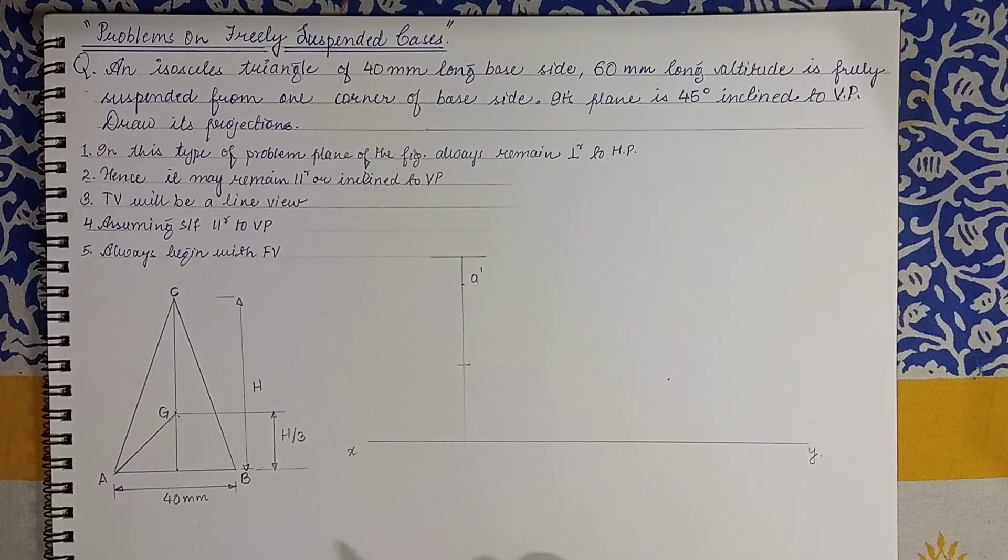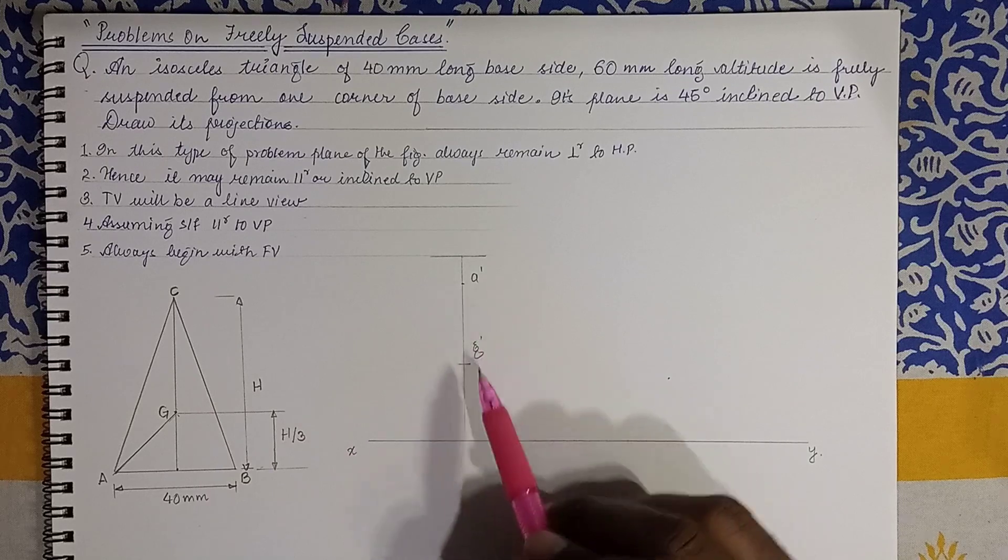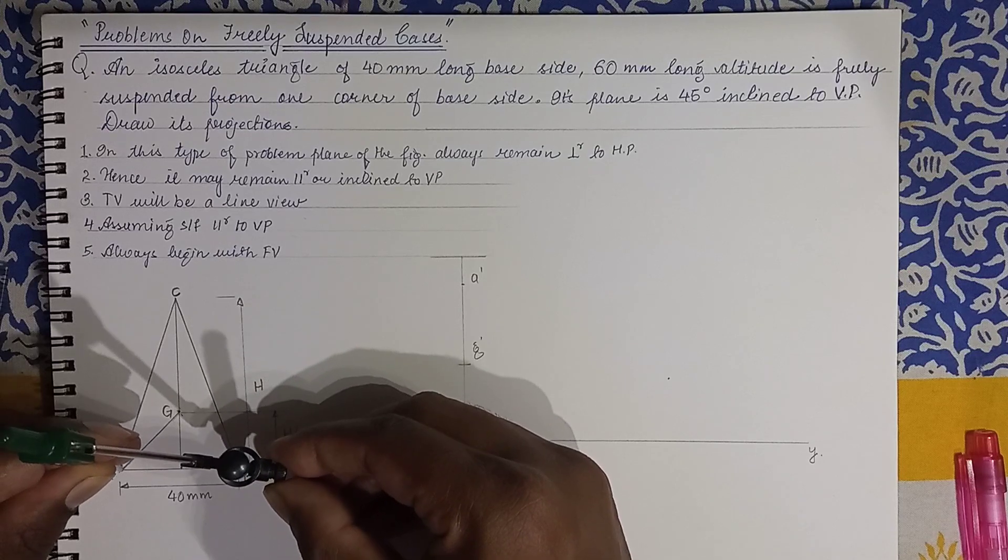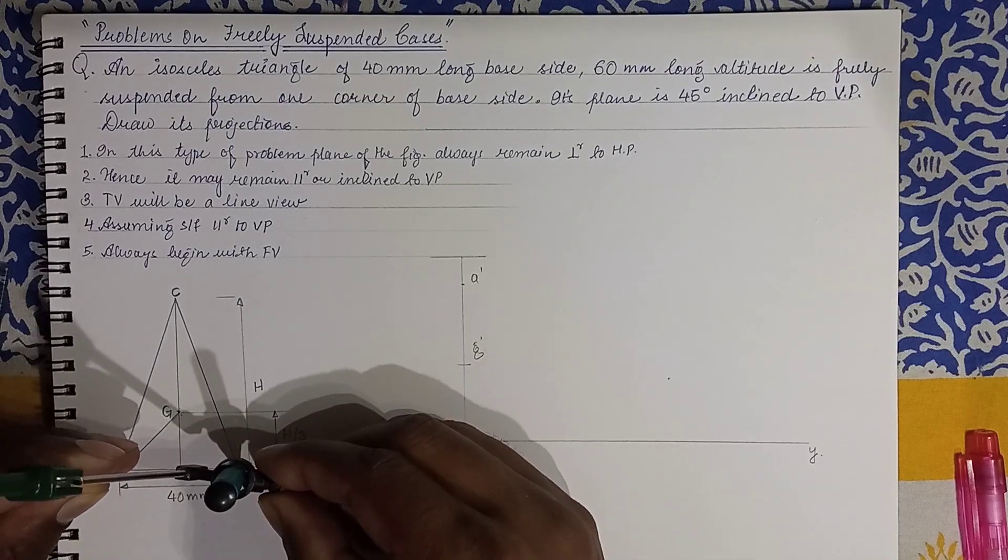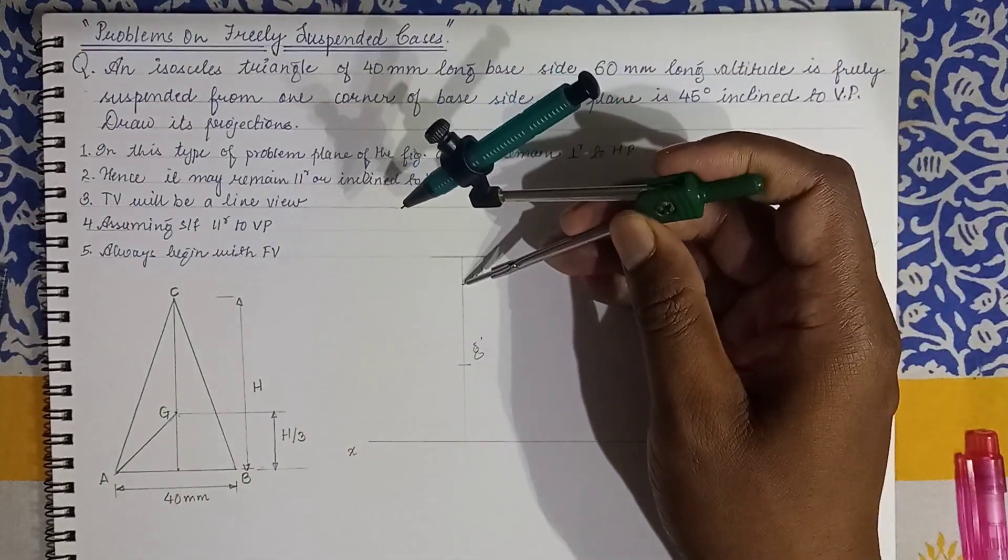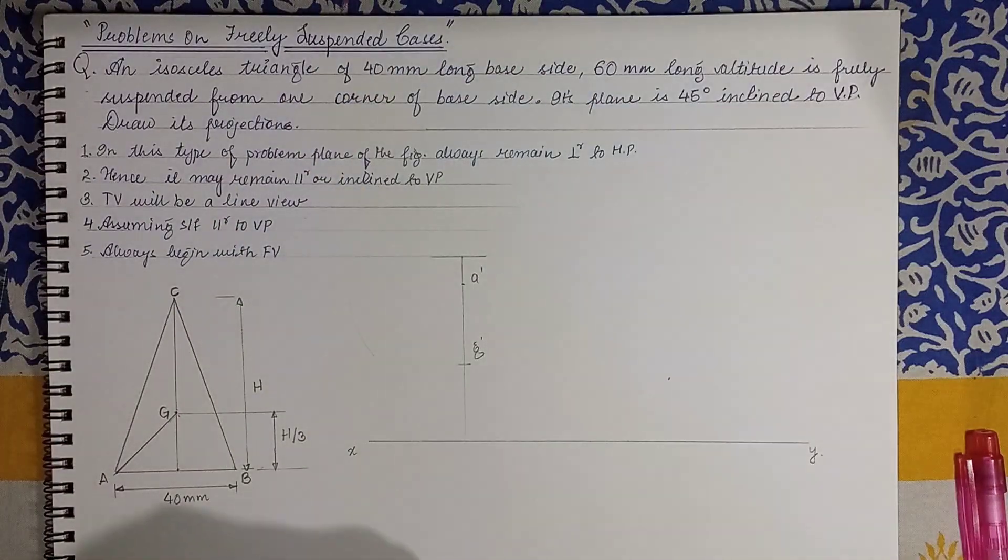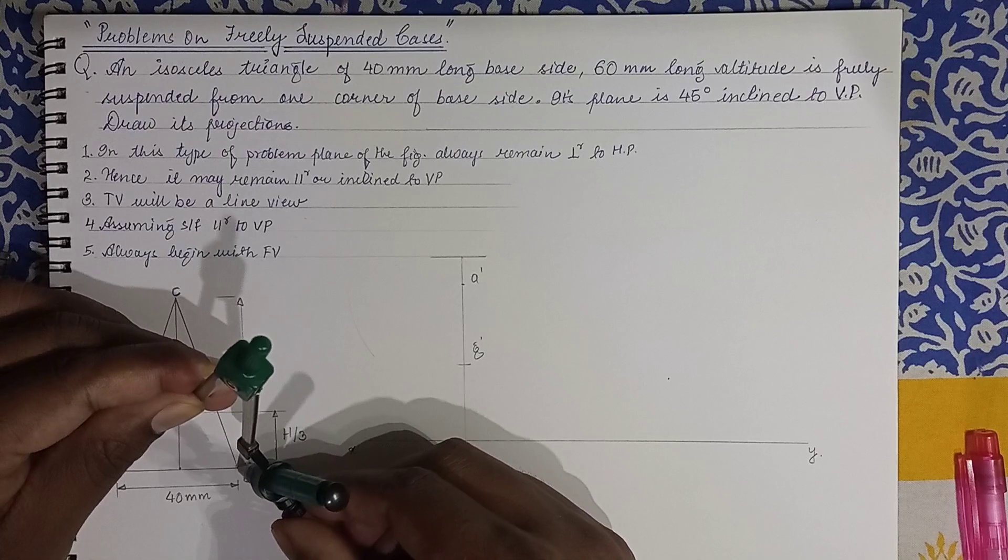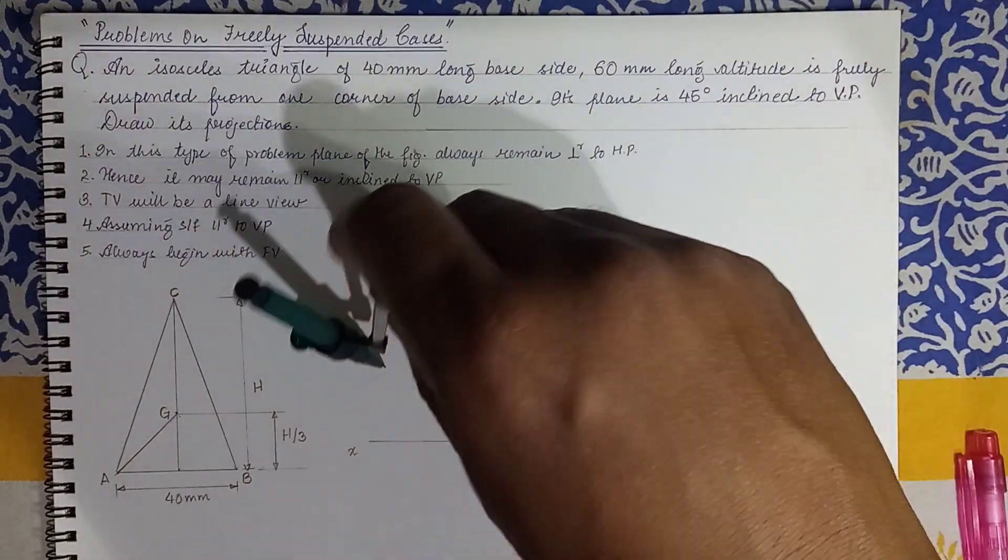Now with the help of two points we need to obtain the rest—other two points. So what we do is we take distance of AB in the compass, AB in the compass. Keep it on A dash and mark the center. Then we take distance GB in the compass, keep the center on G, and mark the arc. So we get point B dash.